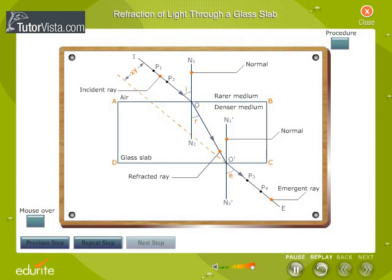That is, angle E is greater than angle OO dash N1 dash. This shows that a ray of light when travelling from a denser to a rarer medium bends away from the normal at the point of incidence.